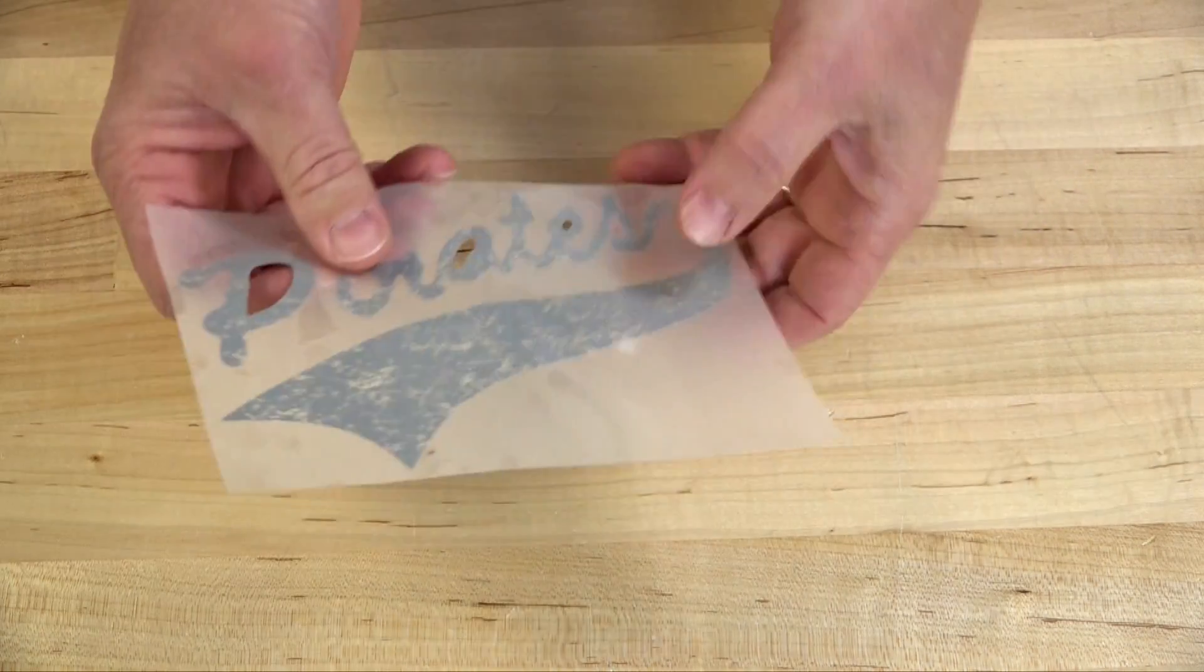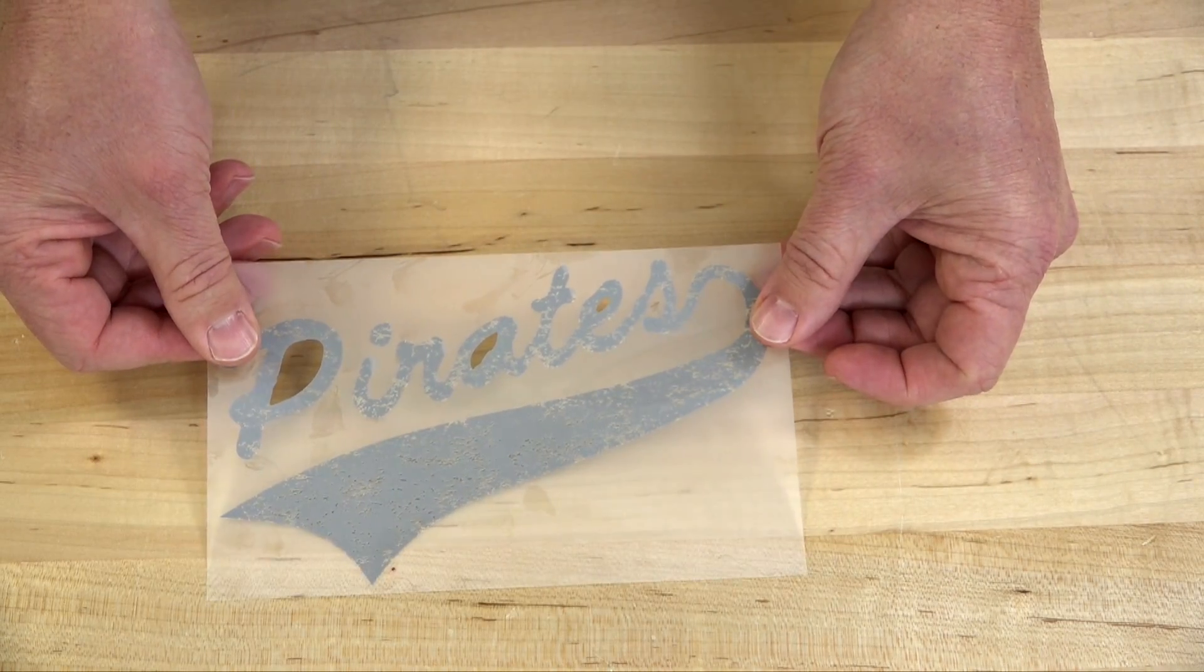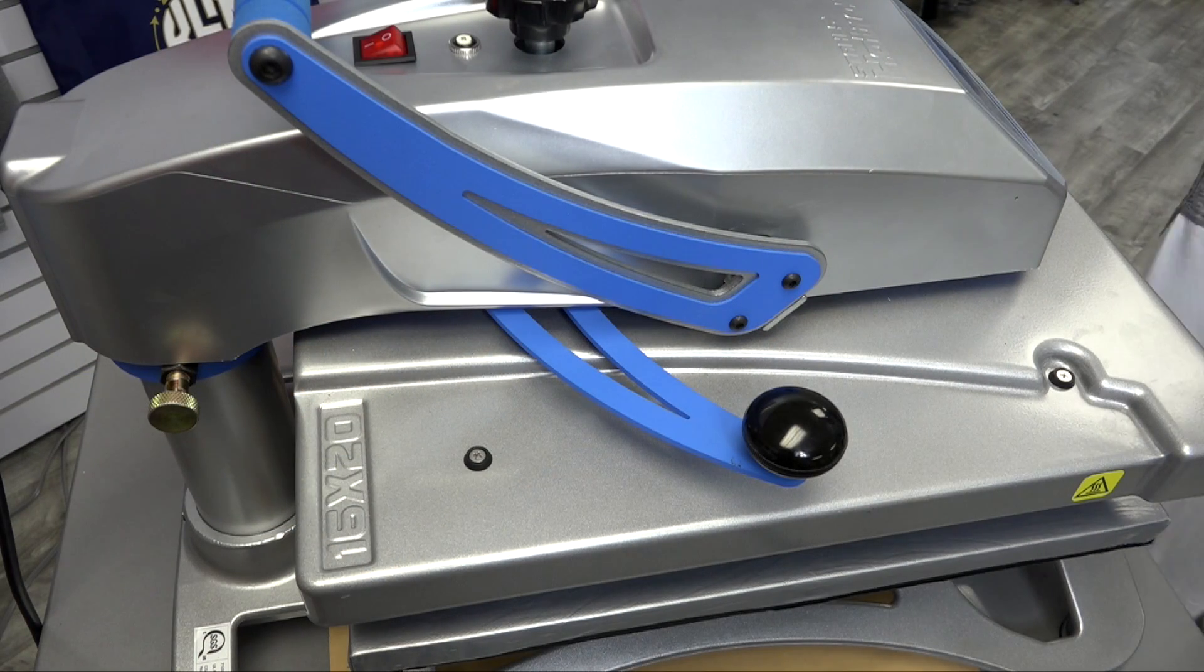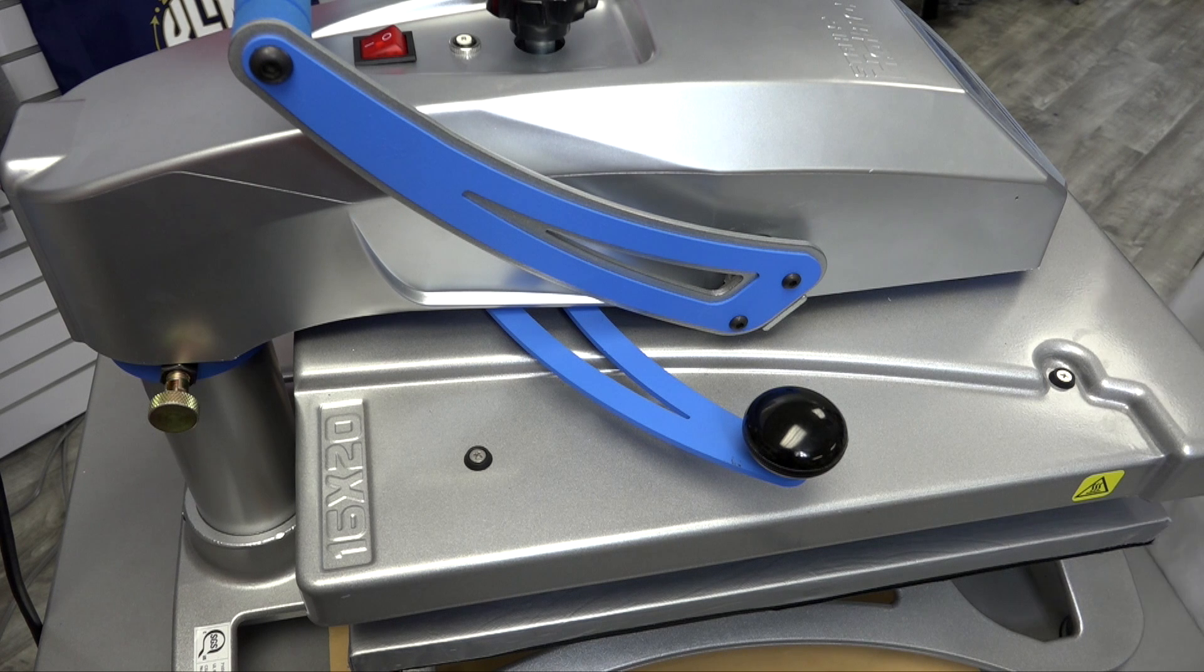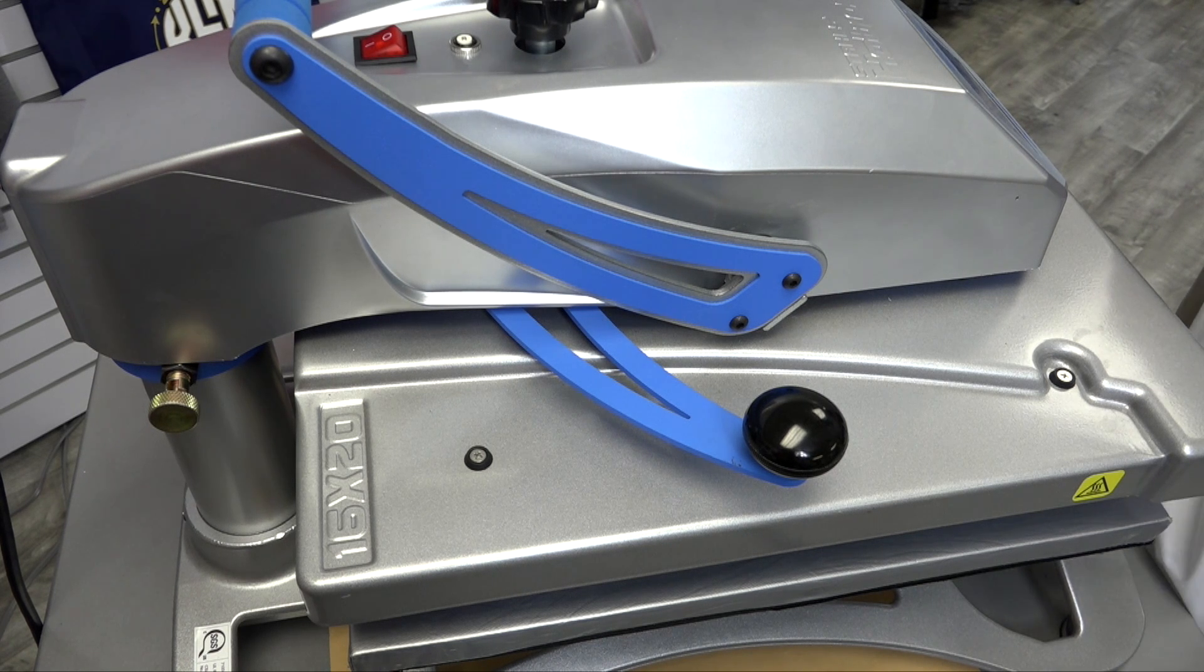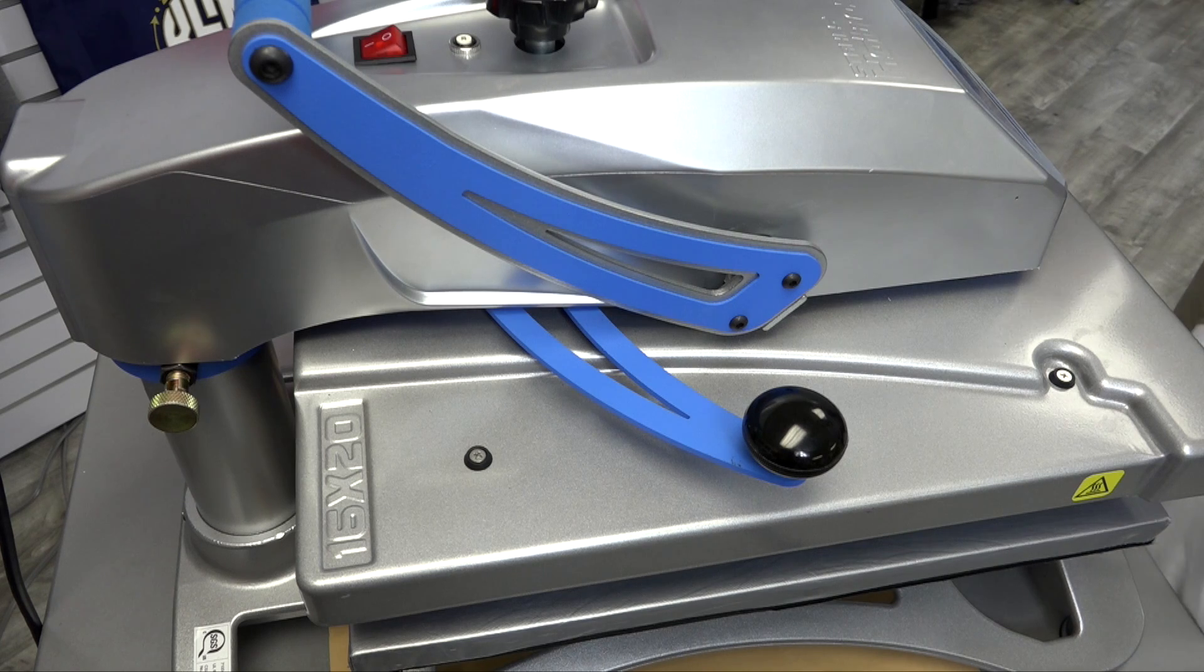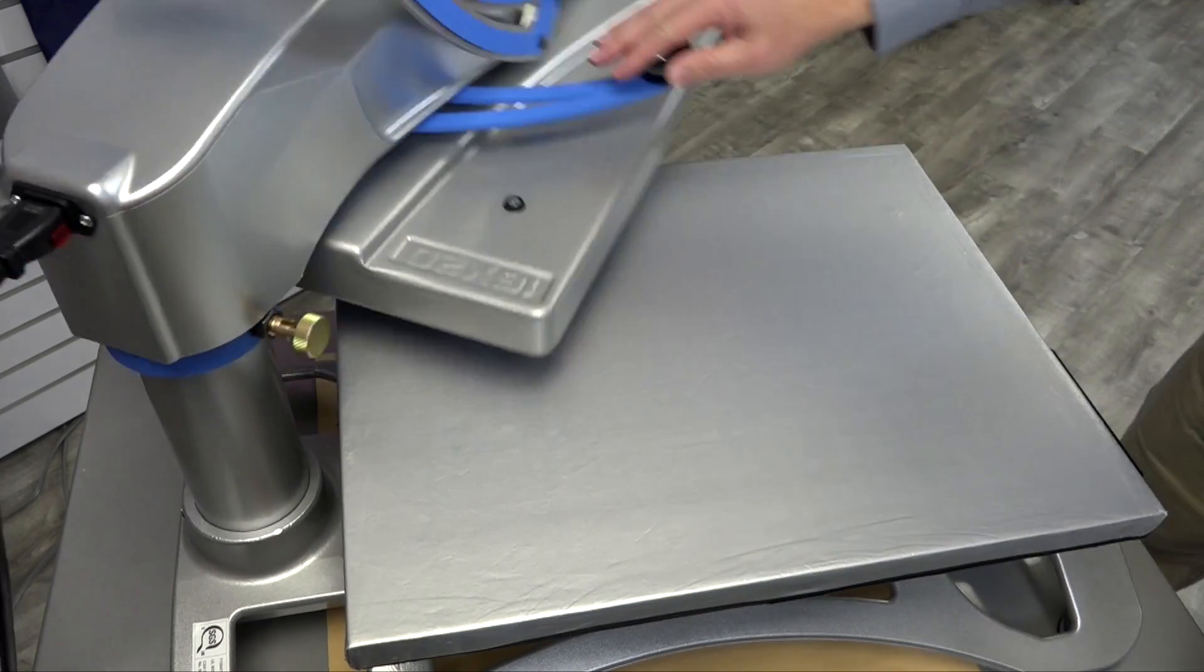Okay, here's our transfer ready to be applied to the garment. All right, so now we're ready to load our garment onto our Hotronix Fusion heat press. We're using Premium Plus as our heat transfer material, so I've made the adjustment to the control panel, so let's go ahead and load the garment.